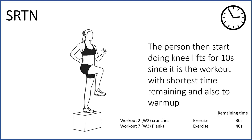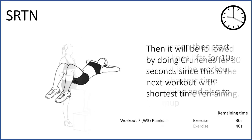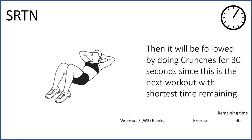Right now we have crunches left with 30 seconds and planks with 40 seconds. Then it will be followed by doing crunches for 30 seconds since this is the next workout with the shortest remaining time.